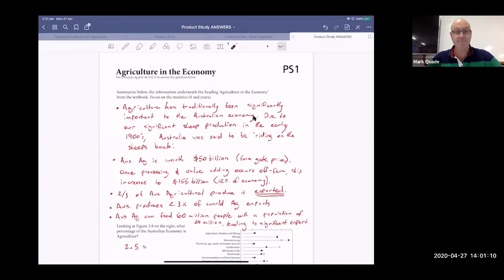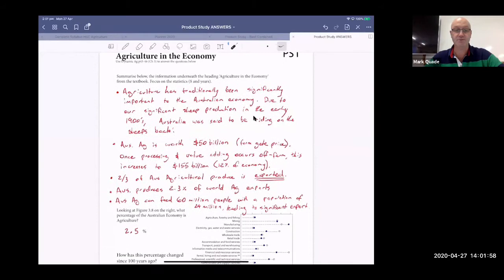Ag has traditionally been significantly important to the Australian economy. Due to our significant sheep production in the early 1900s, Australia was said to be riding on the sheep's back. Australia's average ag is worth 50 billion, that's our farm gate price. Once processing and value adding occurs, it increases to 155 billion, which is about 12% of the economy. Two thirds of Australian agricultural produce is exported. Australia produces 2.3% of the world's ag exports. Australian ag can feed 60 million people in a good year with a population of 24 million. That leads to a significant amount of exports.